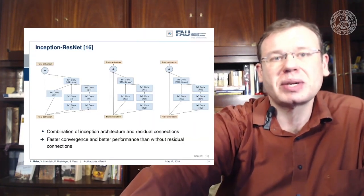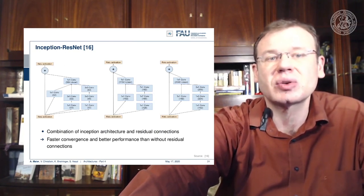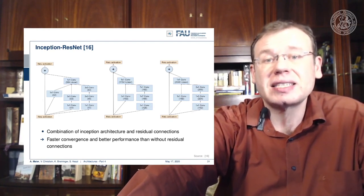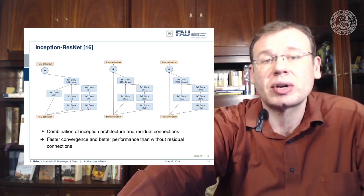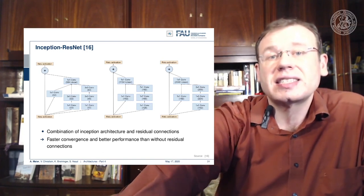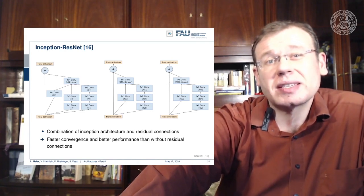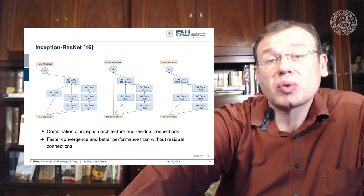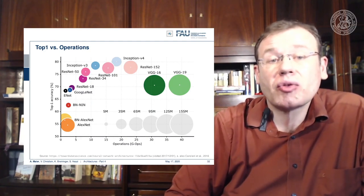We can use the recipe of residual connections also with our inception network, and this leads to Inception ResNet. The idea of residual connections is so easy that you can very easily incorporate it into many other architectures. This is why we present these architectures — they are important building blocks towards building really deep networks. The stuff that works best is really simple, and inception and ResNet architectures really help you build very powerful networks.